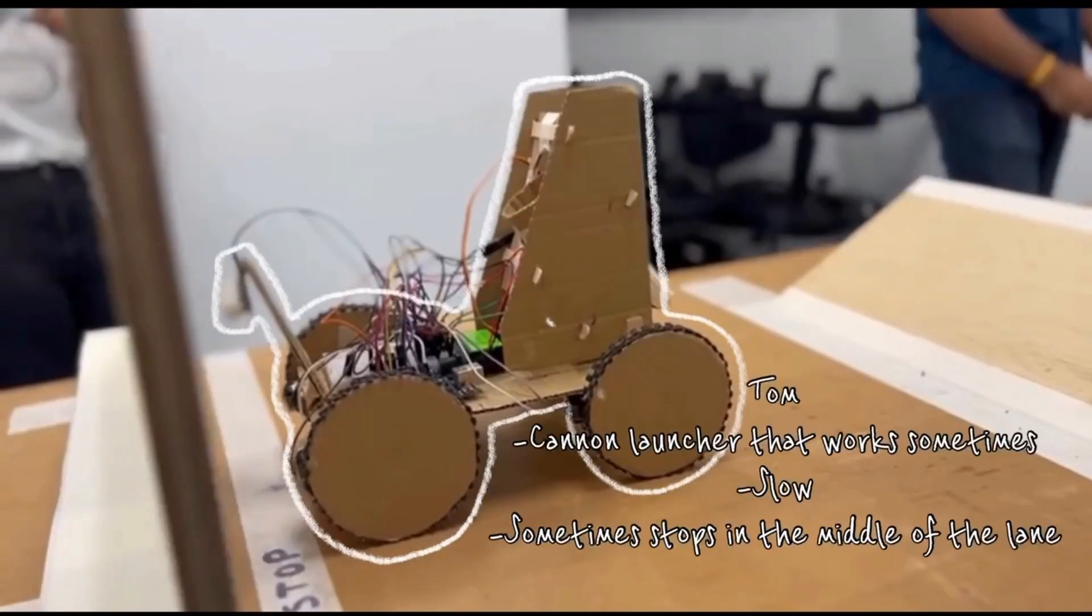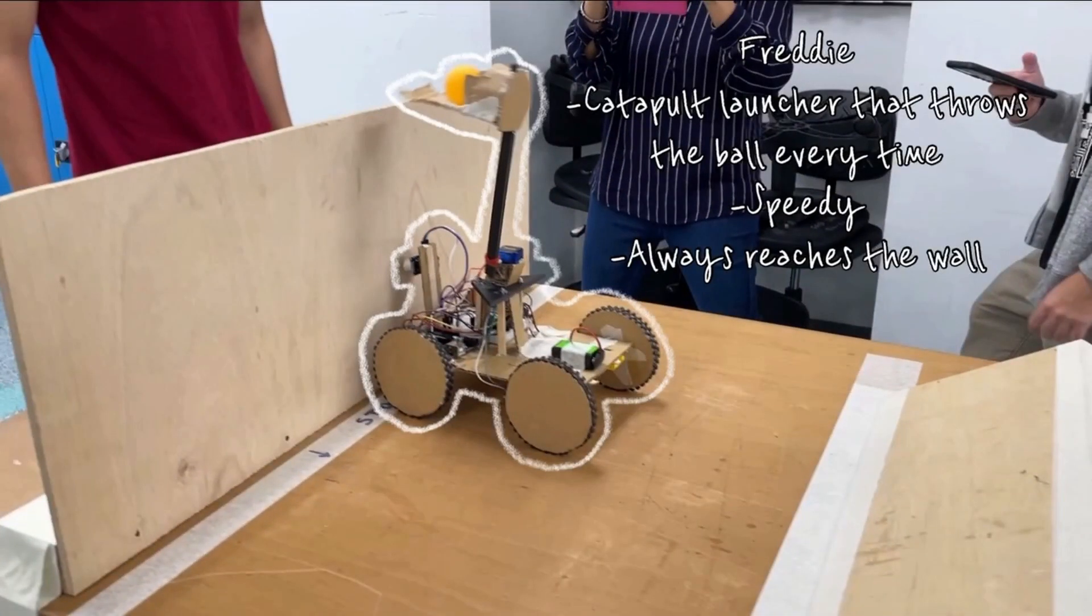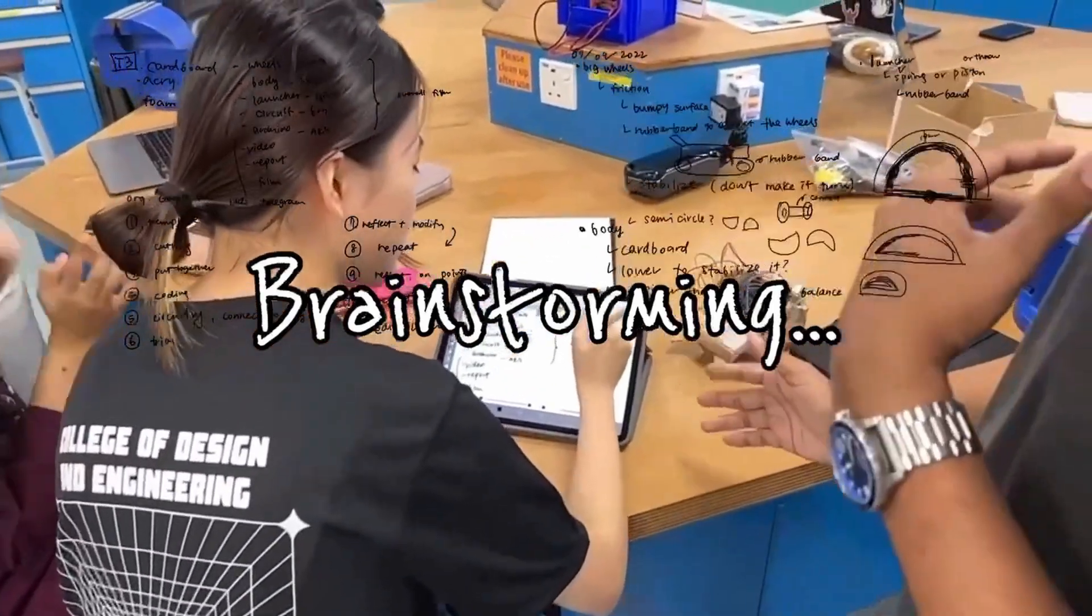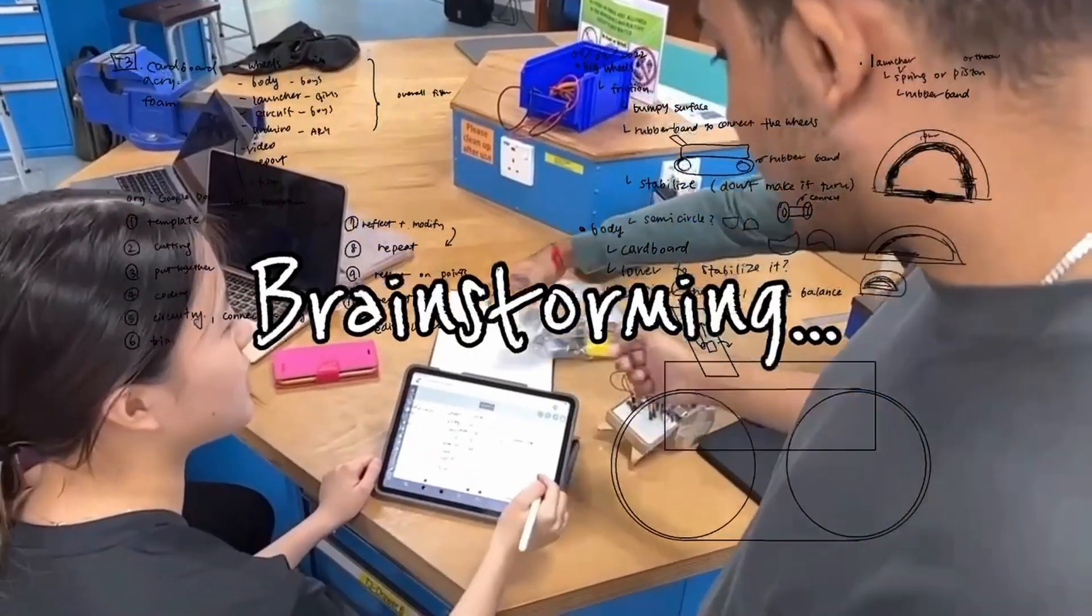So how did we go from our failed Tomcat to the successful Speedy Freddy? We brainstormed to create a robot that is stable, sleek and adaptable to cross the hurdles in the obstacle course.